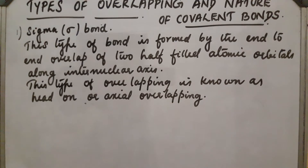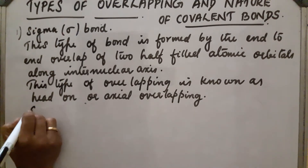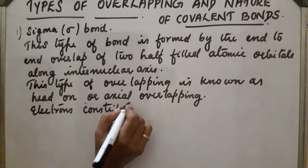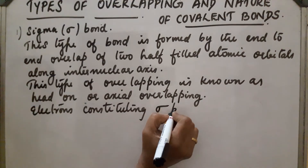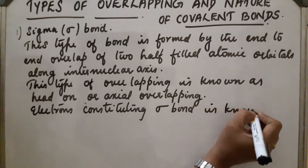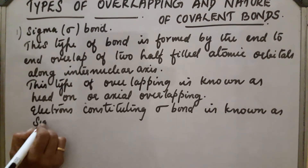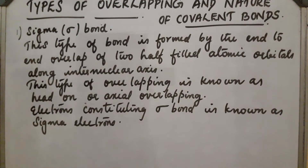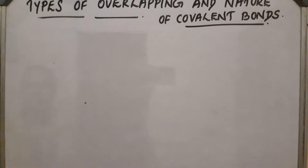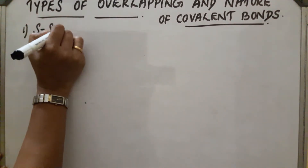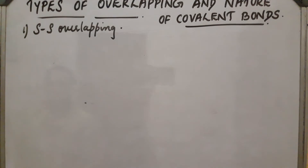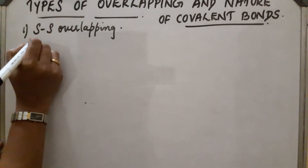The electrons constituting the sigma bond are known as sigma electrons. Now there are different types of overlapping in sigma bond. The first one is S-S overlapping, which is the overlapping between two half-filled S orbitals along the inter-nuclear axis.